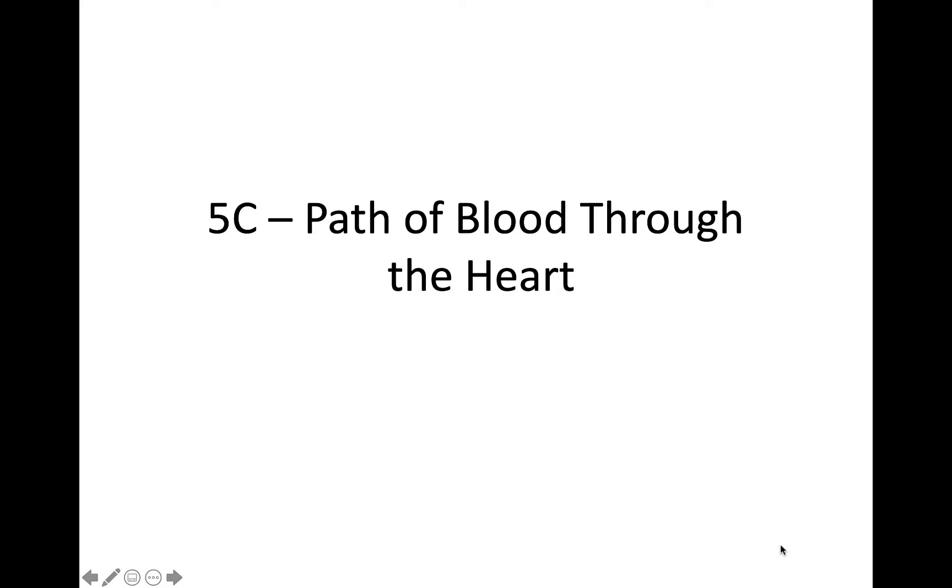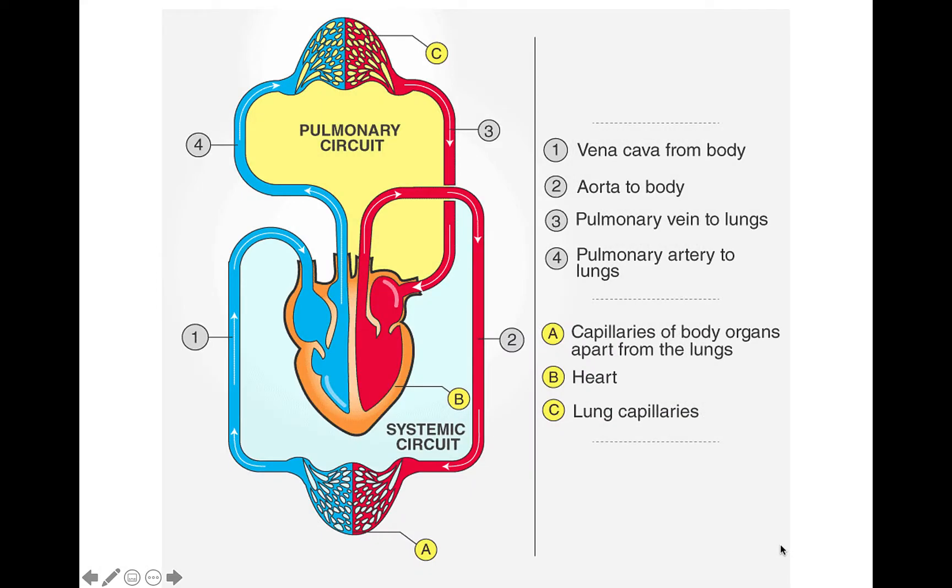Lesson 5c, path of blood through the heart. The heart is described as a double pump, where the right side pumps blood to the lungs to become oxygenated, and the left side pumps the blood to all the different organs and tissues of the body to provide them with oxygen, water, and nutrients, while removing waste produced by cellular metabolism.